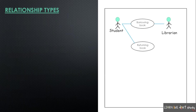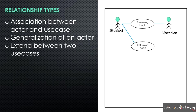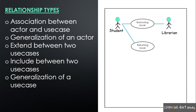Next is Relationship. In the use case diagram, there are five types of relationships: association between actor and use case, generalization of an actor, extend between two use cases, include between two use cases, and generalization of a use case. Each relationship type has specific conditions.